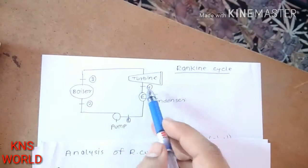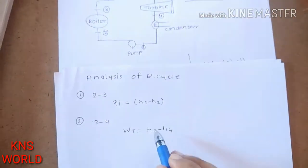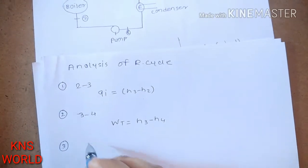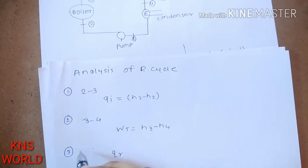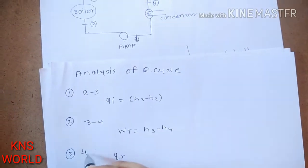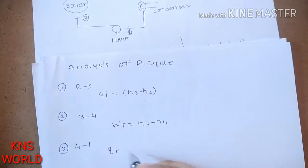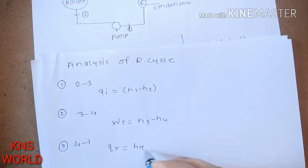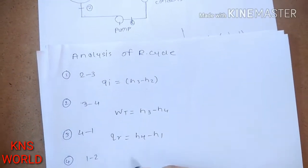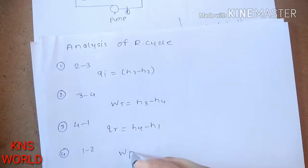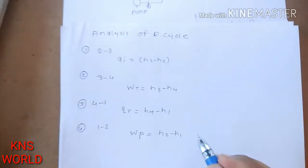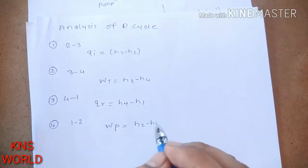Note that H3 is greater than H4, so we take H3 minus H4. Third, QR — heat rejected — corresponds to the condenser process, and equals H4 minus H1. Fourth, pump work WP equals H2 minus H1.